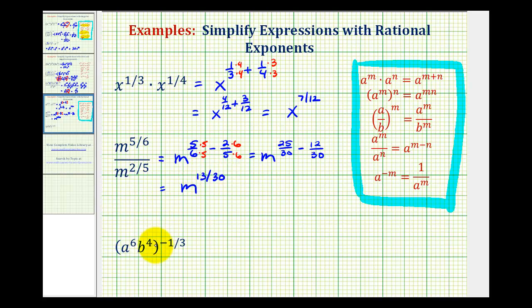And then for the third example, we have powers raised to powers. So we're going to multiply the exponents. So here we're going to have a to the power of six times negative one-third, b to the power of four times negative one-third.